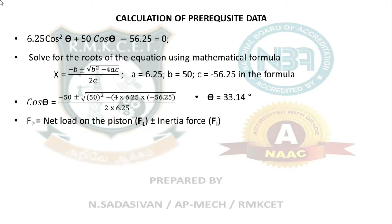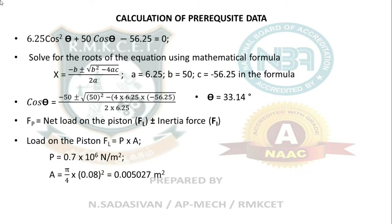Calculate net load on the piston: FL equals pressure times area. Pressure is 0.7 times 10⁶ N/m². Area of the piston equals π divided by 4 times (0.08)² equals 0.005027 m². Therefore FL equals 0.7 times 10⁶ times 0.005027, which gives FL equals 3520 Newton.